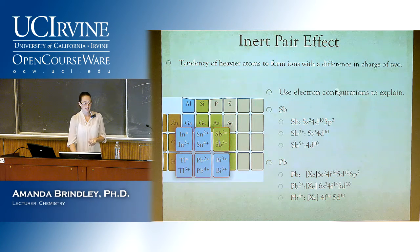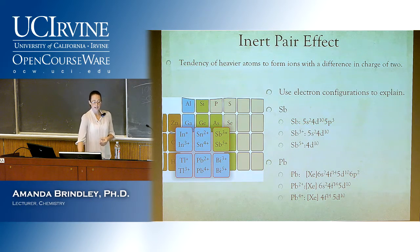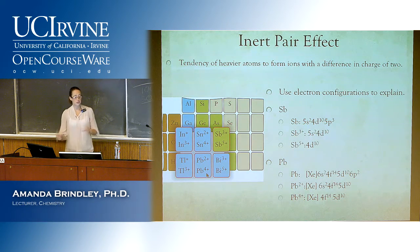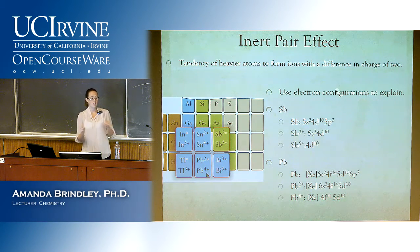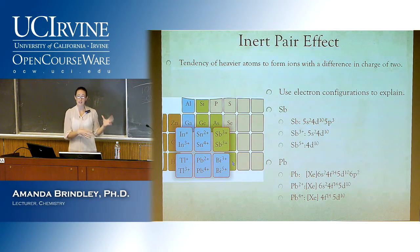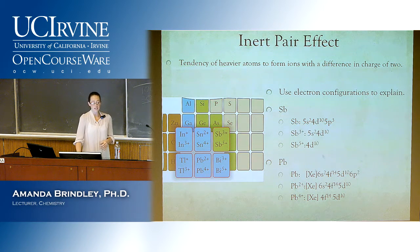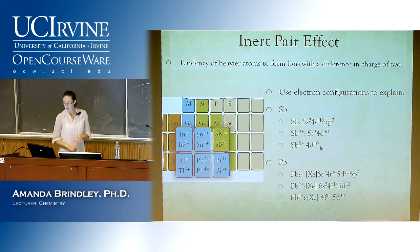The reason for the difference of two across the whole pattern: this first column only has one P electron, so you get plus one then plus three. The next column has two P electrons — plus two then plus four. The next has three — plus three then plus five. Always a difference of two because you always remove two S electrons in the second step. Go through the remaining four elements at home and write out their electron configurations to confirm the pattern.